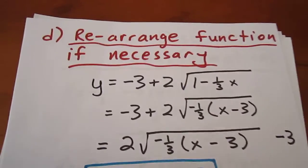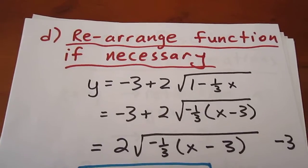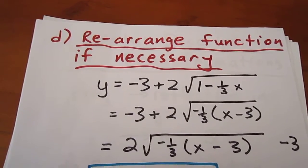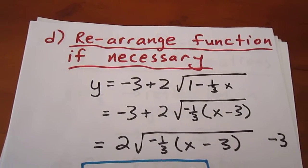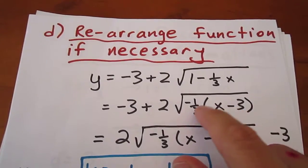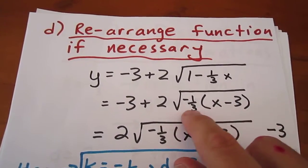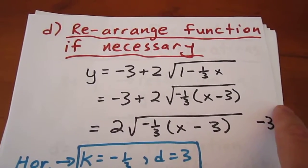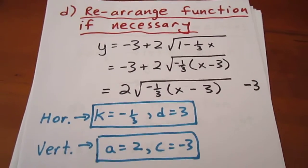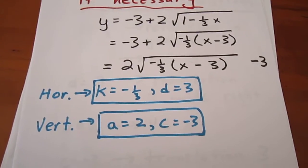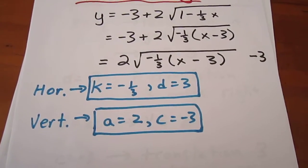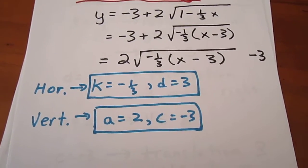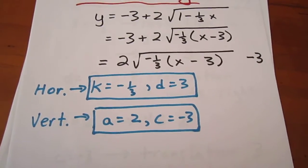We then can determine vertical transformations by rearranging the function if necessary. What we can do after we factor out the argument to determine the k and d values is rearrange the expression, bring the negative 3 term to the far side, and we can say that our k value is negative 1 third, d is 3, a is 2, and c is negative 3.